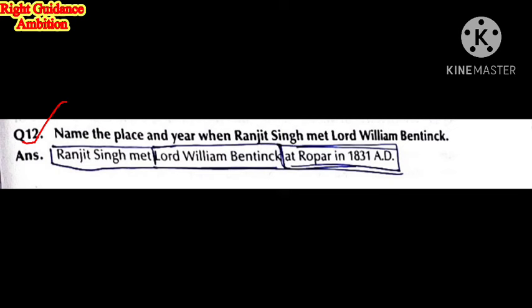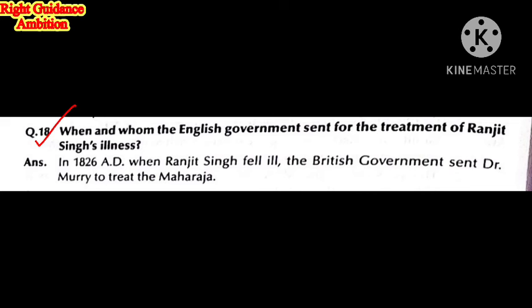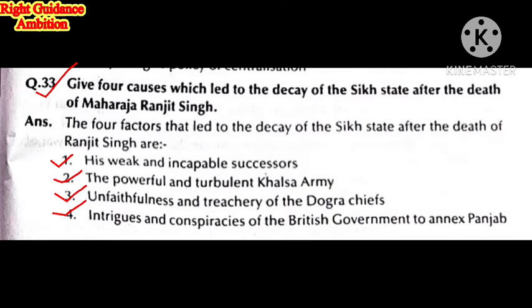Name the place and year when Maharaj Ranjit Singh met Lord William Bentinck. They met in 1831 at Ropar. The next question: when and between whom was the Tripartite Treaty signed? It was signed in 1838 between the British, Maharaj Ranjit Singh, and Shah Shuja — three parties, which is why it is called the Tripartite Treaty.